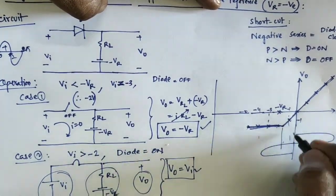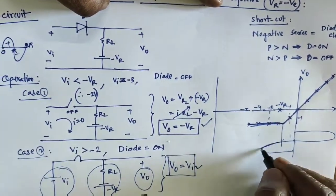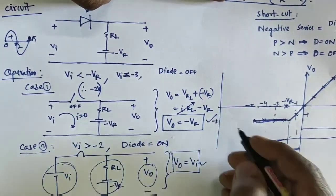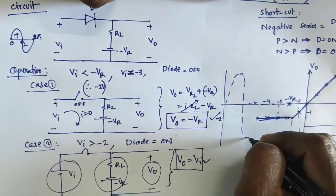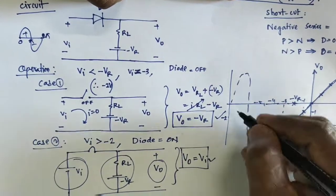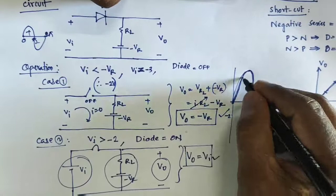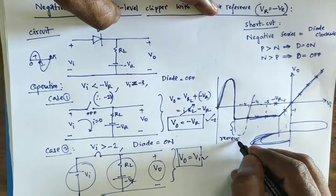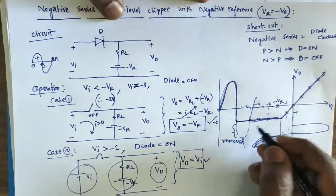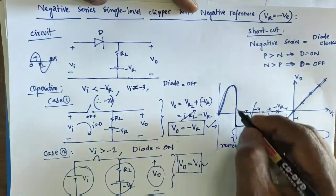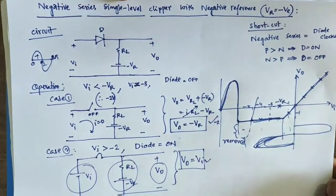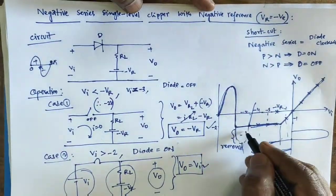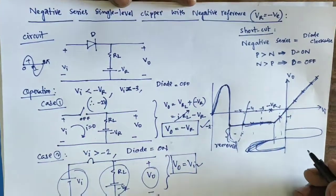Above the reference, all values are reflected on the slope at the output stage. Below minus two volts, the output is clamped at minus two volts. The dotted line shows the entire waveform — all positive values and values above minus Vr pass through as-is. Below minus Vr, the output is minus two volts — that portion is removed. This is the final conclusion: in a negative series single-level clipper, the part below the negative reference is removed, and the part above is transmitted.